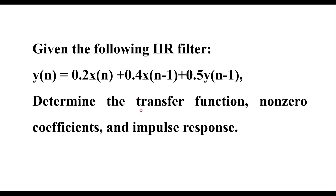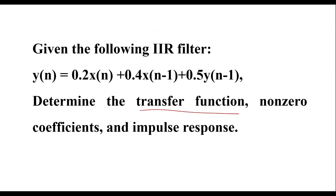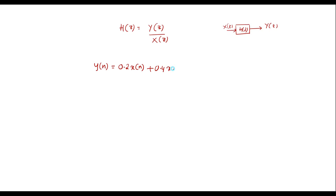For the given equation, first let me calculate the transfer function. Transfer function means H(z). We need to calculate H(z), which is equal to Y(z) divided by X(z) — that is output divided by input. The given equation is y(n) = 0.2x(n) plus 0.4x(n-1) plus 0.5y(n-1).